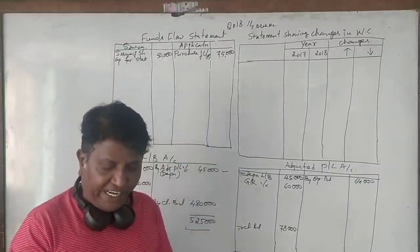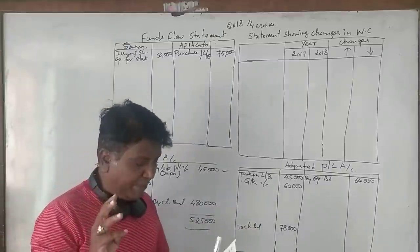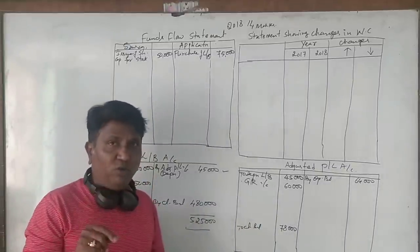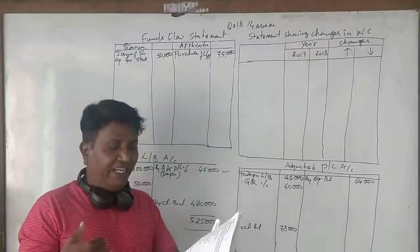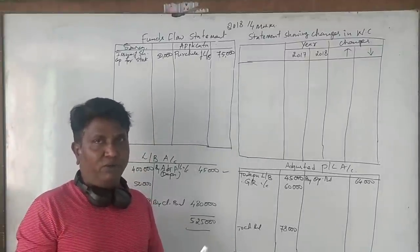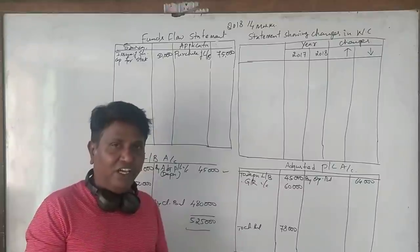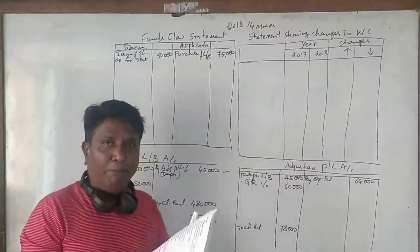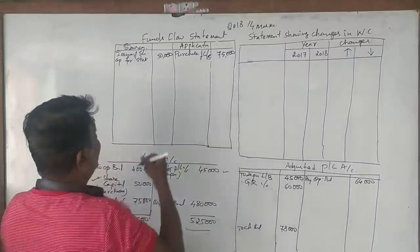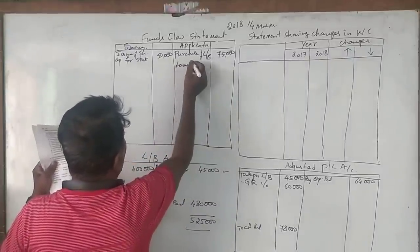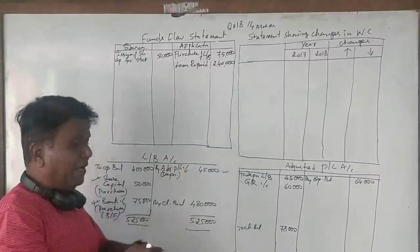Bank loan: Rs 3,20,000 and Rs 80,000. Always I told you, share capital, reserves, and bank loan are sources. During 2017 we had borrowed Rs 3,20,000 of long-term bank loan, but at the end of 2018 it is showing only Rs 80,000. That means the difference of Rs 2,40,000 is the bank loan long term which we have repaid. If you repay, it goes to the application side. So loan repayment of Rs 2,40,000 goes to applications.